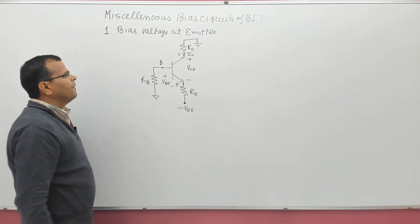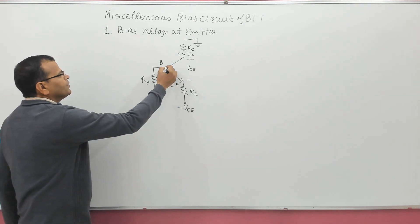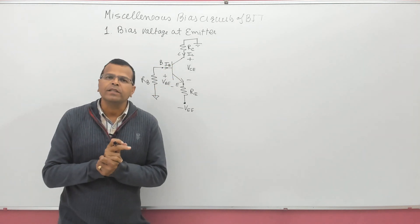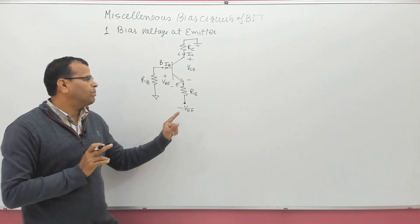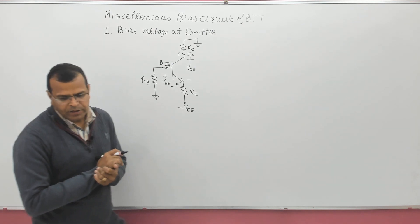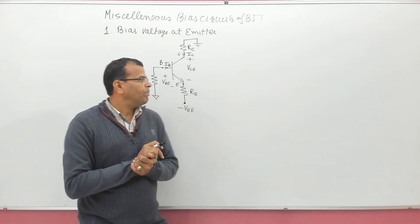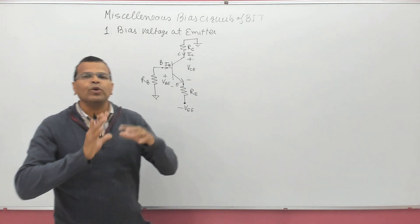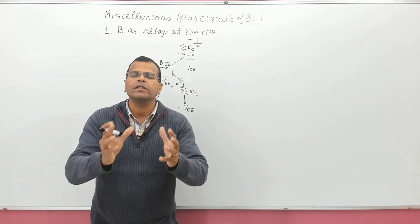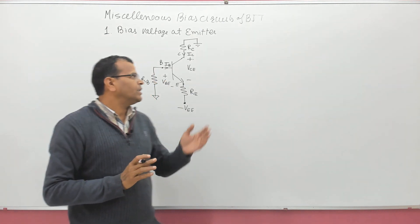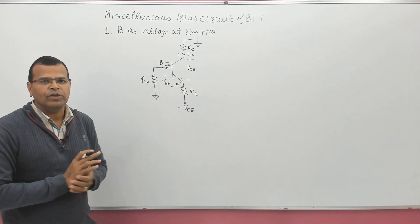The current entering into the base terminal is IB. This is your BJT circuit with biasing voltage connected at the emitter terminal. When biasing voltage is given at the emitter terminal, the approach of analysis of the circuit remains the same. The only change is the change of biasing voltage.